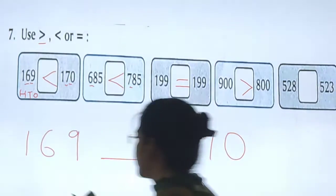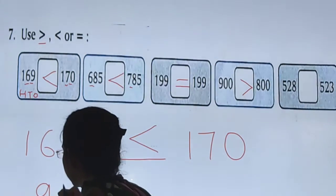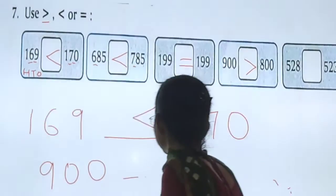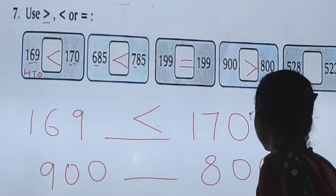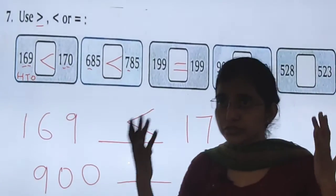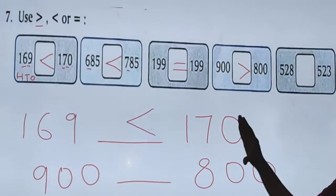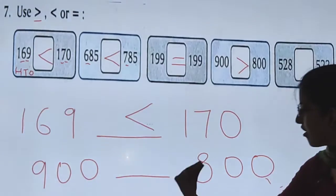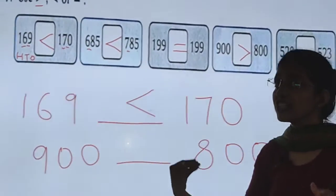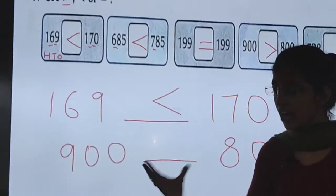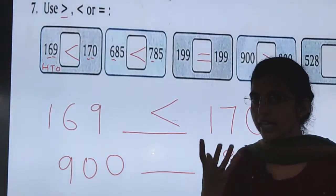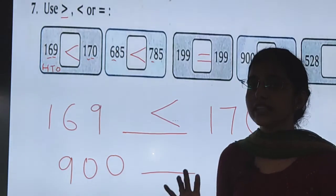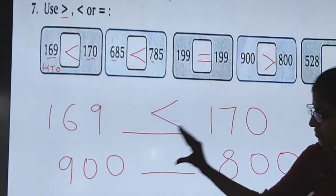900 and 800. This tip you have to use if you get confused. What I will eat? I will eat 900 or I will eat 800. Hum humesha zyadha chocolates khaenge. Ha na? To hum isse khaenge. To ye humara mouth jab hum kuch khate hai to what happens we open our mouth like this. Like this. So, see.